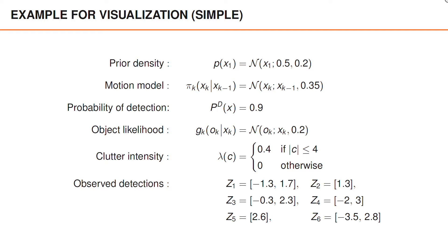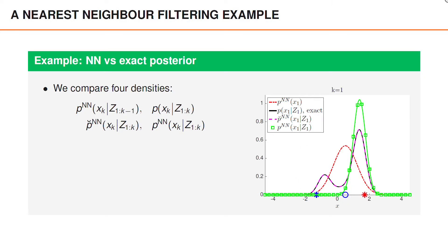We eventually become convinced that the state is somewhere close to 3. To gain insights into the properties of the nearest neighbor algorithm, we visualize four different densities. The first is the predicted density according to the nearest neighbor algorithm, illustrated in a red point-dashed curve.